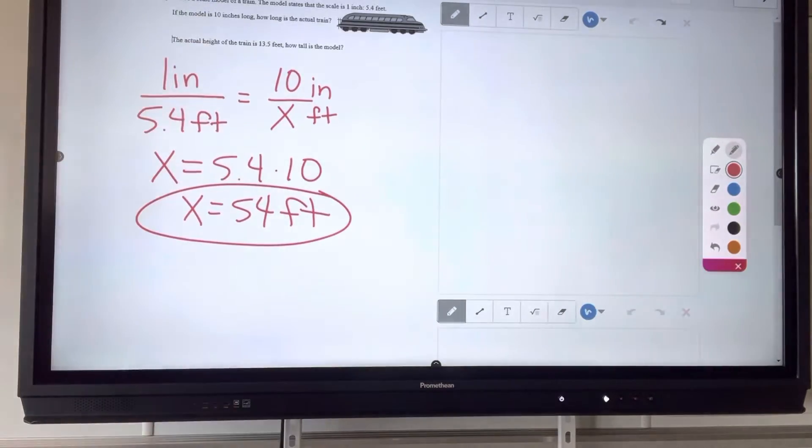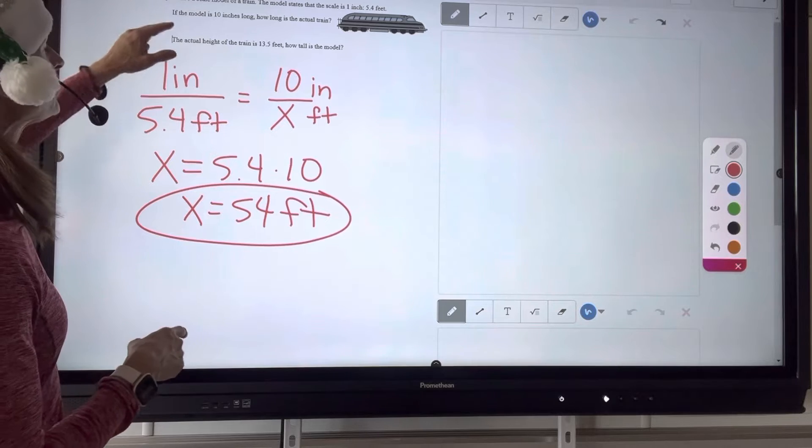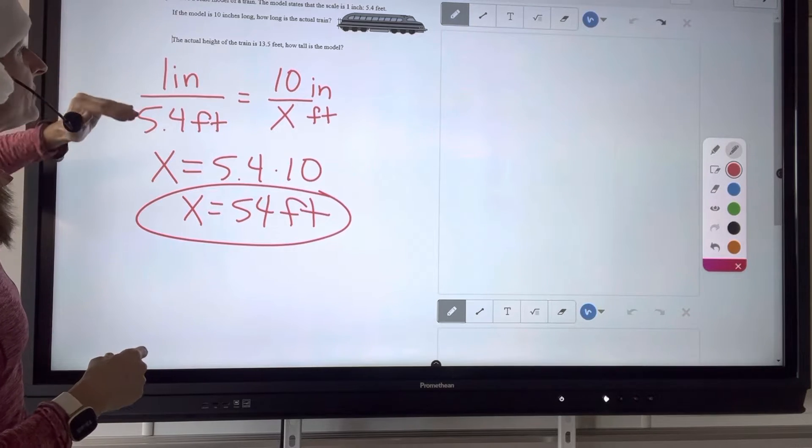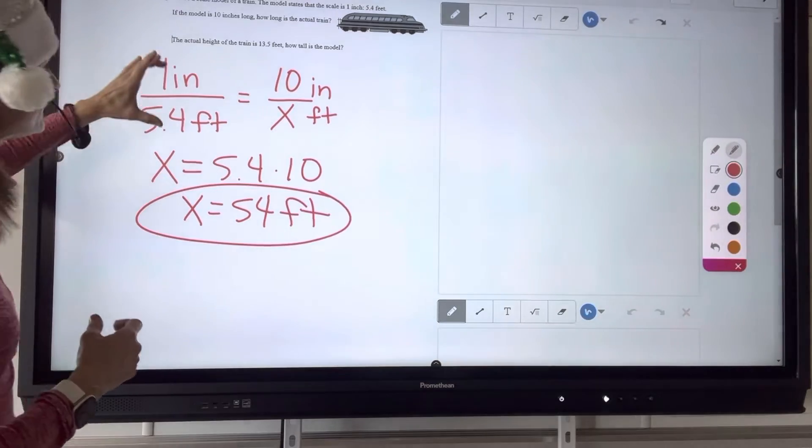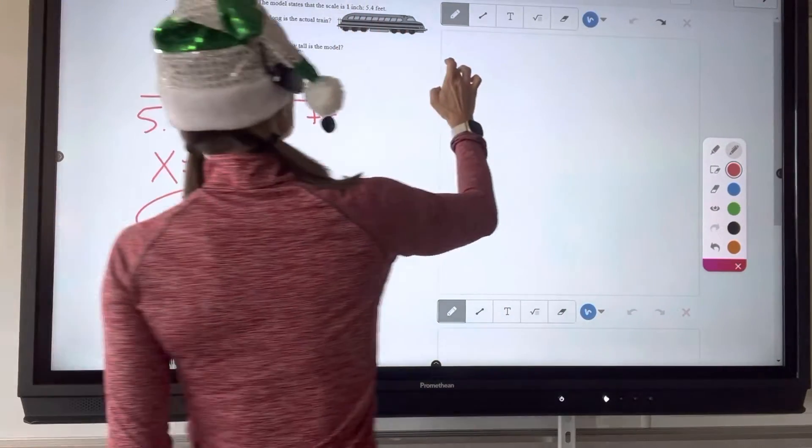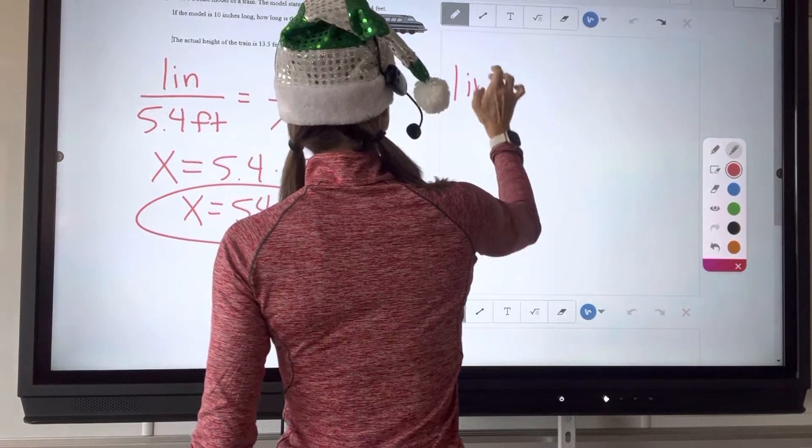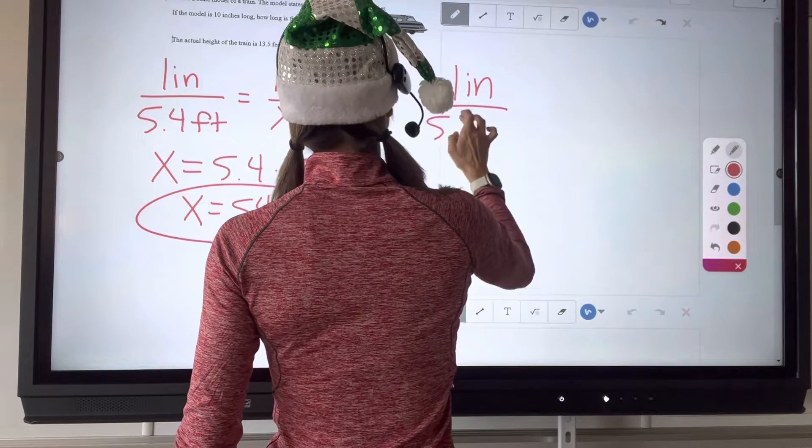Okay. Next problem. Now, if the actual height of the train is 13.5 feet, well, let's go ahead and use the same ratio. We've got the same scale, we've got the same model. So one inch for every 5.4 feet.